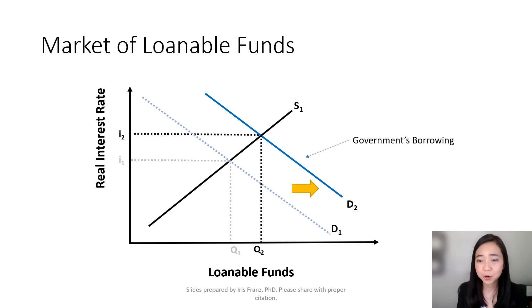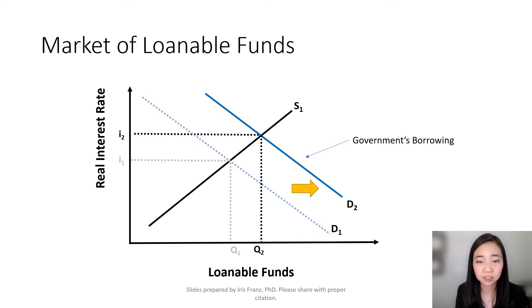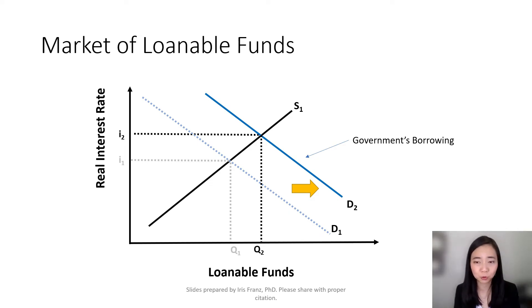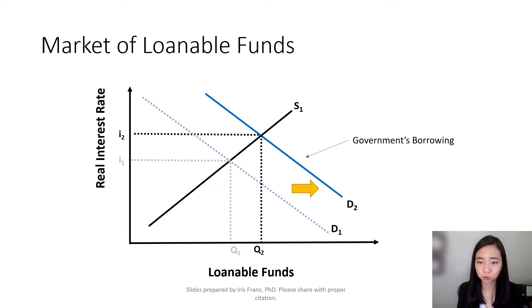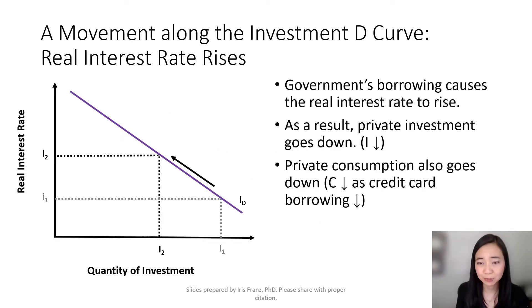Here is a diagram that explains crowding out. When the government borrows to finance its spending, that is going to shift the demand for loanable funds to the right. As a result, the real interest rate will go up. After the real interest rate goes up, private investment is going to go down.